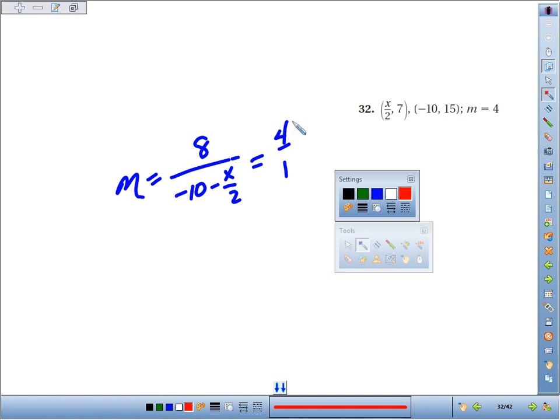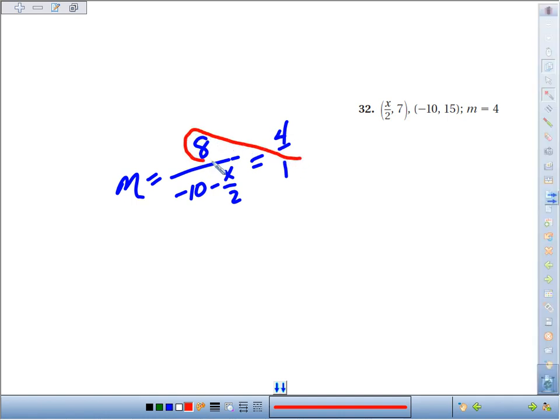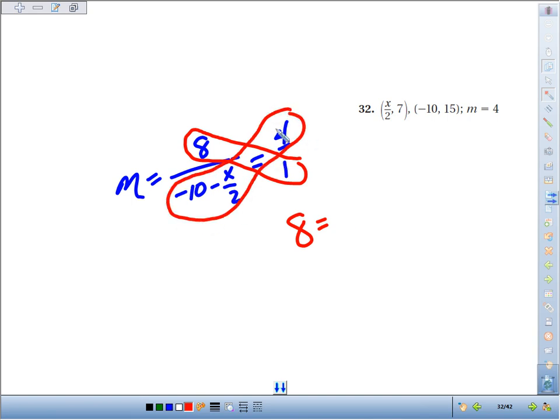Now with a proportion, we can always say that cross products are going to be equal. So if I take 1 times 8, or 8, that's going to be equal to 4 times the quantity negative 10 minus x over 2.